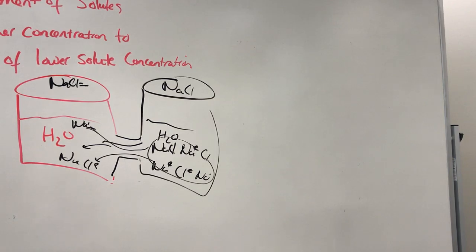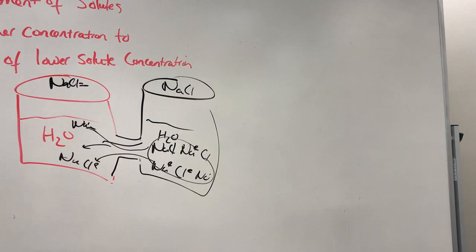We see diffusion occurring all the time in our cells. We don't really see a lot of simple diffusion though. Oxygen goes in without needing help — it goes right through the plasma membrane. Carbon dioxide goes out, right through the plasma membrane. Gases pass through without help.